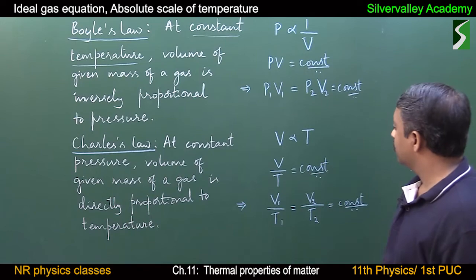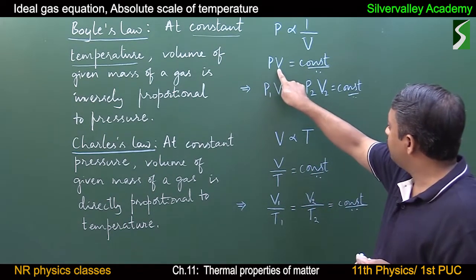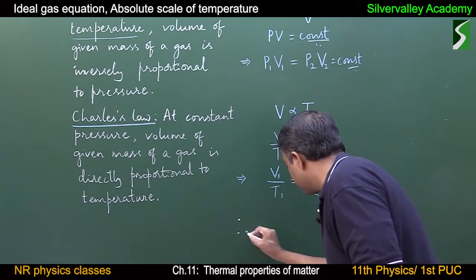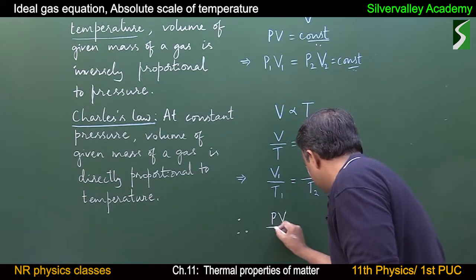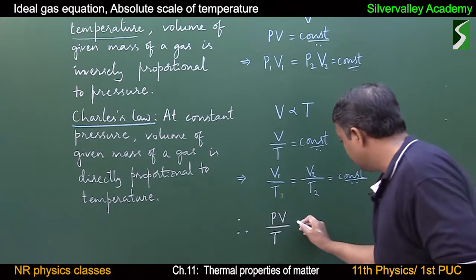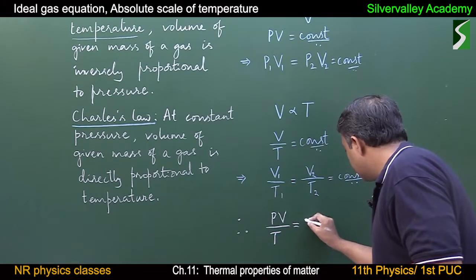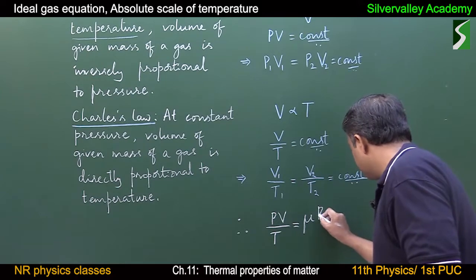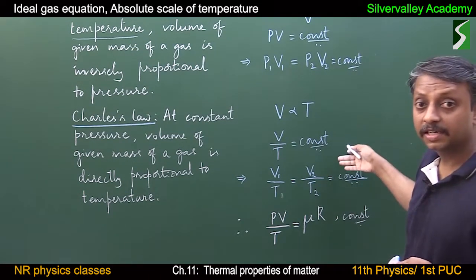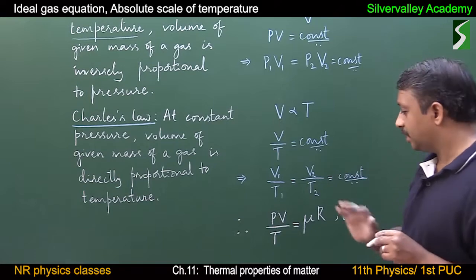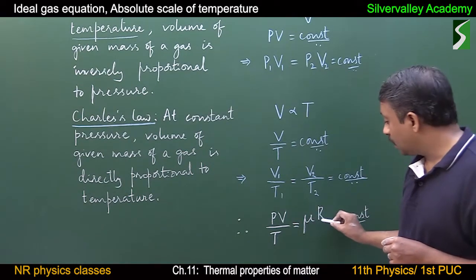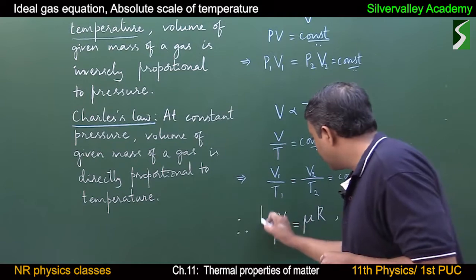From Boyle's law, PV is constant. From Charles' law, V by T is constant. Combining these, we can write PV by T should also be a constant. That constant is μR, where μ is the number of moles and R is the gas constant. So PV by T equals μR, which gives us PV equals μRT — this is called the ideal gas equation.